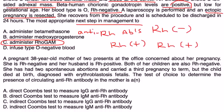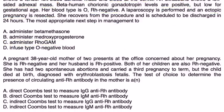Final question. A pregnant 38-year-old mother of two presents at the office concerned about her pregnancy. She is Rh negative, husband is Rh positive, both of her children are also Rh negative. She has had two spontaneous abortions and carried a third pregnancy to term, but the child died at birth diagnosed with erythroblastosis fetalis.